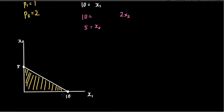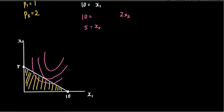So this is one of the first order conditions for utility maximization. Now I want to introduce three utility levels on the graph: this utility curve, this utility curve, and this utility curve. I'll label them accordingly — this would be U1, this would be U2, and this would be U3.